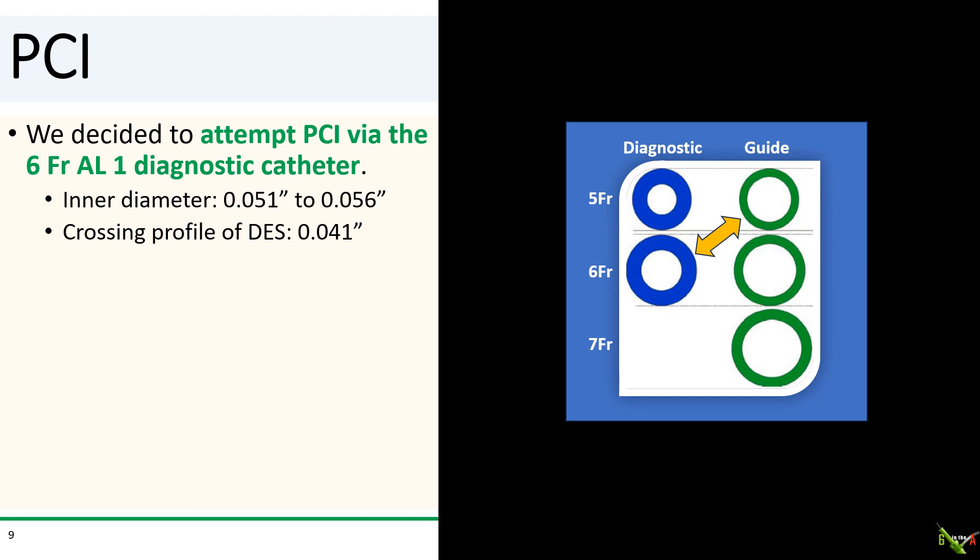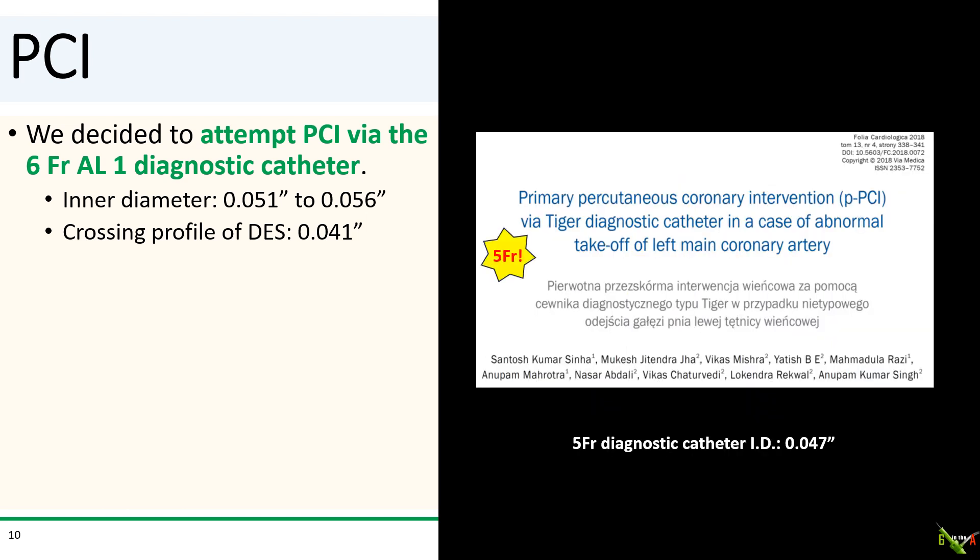This is not as crazy as it might sound. The inner diameter of a 6 French AL1 diagnostic catheter is actually only slightly smaller than the inner diameter of a 5 French AL1 guide catheter, and it is substantially larger than the crossing profile of a DES. In fact, folks in India have successfully performed permanent PCI in a STEMI case using a 5 French AL1 diagnostic Tiger catheter, where the inner diameter is only slightly larger than the crossing profile of a DES.